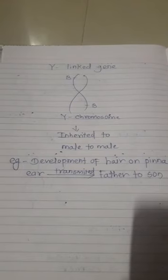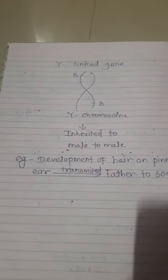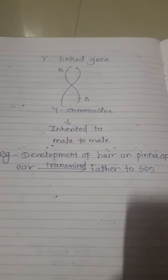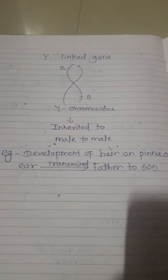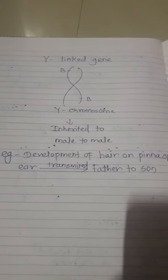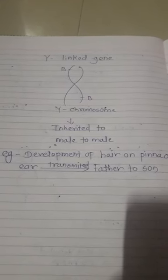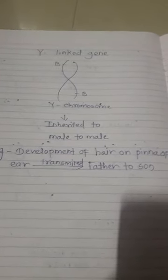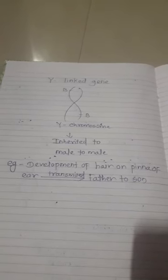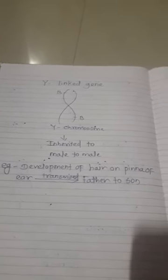X-linked genes and Y-linked genes when inherited can form disorders. When recessive genes are present, disorders such as color blindness, night blindness, and hemophilia are formed. Now the next topic is color blindness.